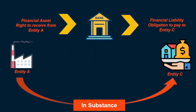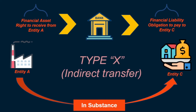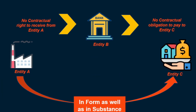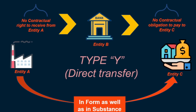Now, this transfer can happen in two ways. One is what we just discussed in our example of entity B, where entity B actually retained the right to receive contractual cash flows from entity A and assumed a contractual obligation to pay cash flows to entity C — let's call this type X transfer. Another way an asset could be transferred is if entity B no longer retains the right to receive cash flows to pay to entity C, such as simply selling a corporate bond issued by entity A to entity C — let's call this type Y transfer. So type X is an indirect transfer, and type Y is a direct transfer.